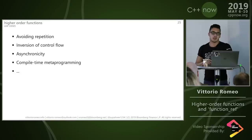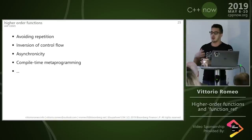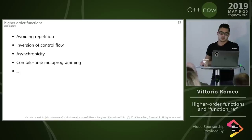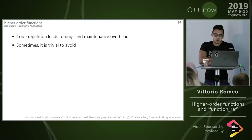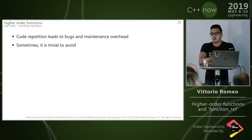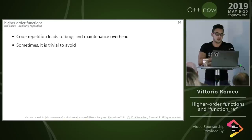What use cases do we have for higher-order functions in day-to-day programming at a big corporation? I found the most common ones are: avoiding repetition, inversion of control flow, asynchronicity, and compile-time metaprogramming. Avoiding repetition is generally a bad thing — it leads to bugs and maintenance overhead, though there is a trade-off and sometimes it's not worth it.